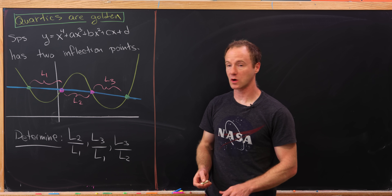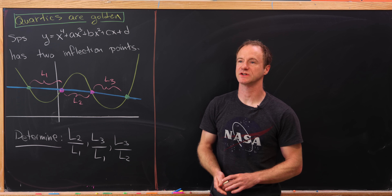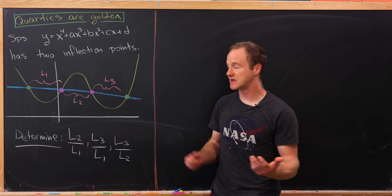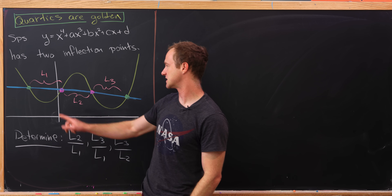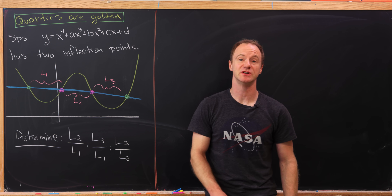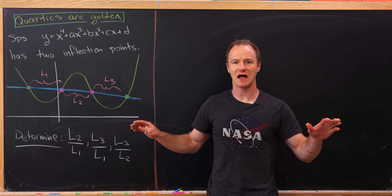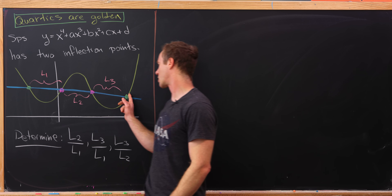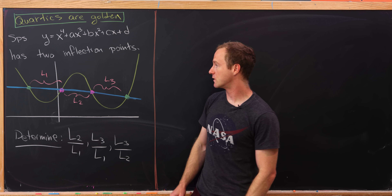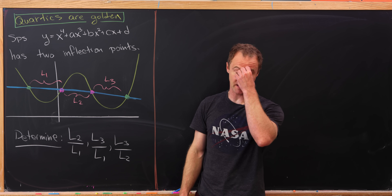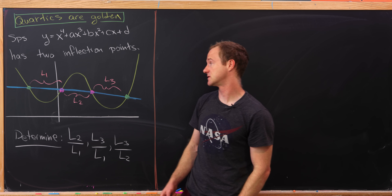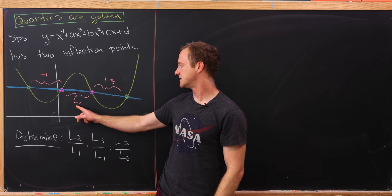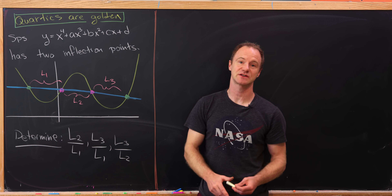Today I'd like to look at a nice property of quartic polynomials — not all quartic polynomials, only those that have two inflection points. We'll take a quartic polynomial with two inflection points, those two magenta points, and define a line through those two inflection points. Then we'll see where that line intersects the curve in two other places, and measure the lengths L1, L2, and L3 of the segments created from left to right.